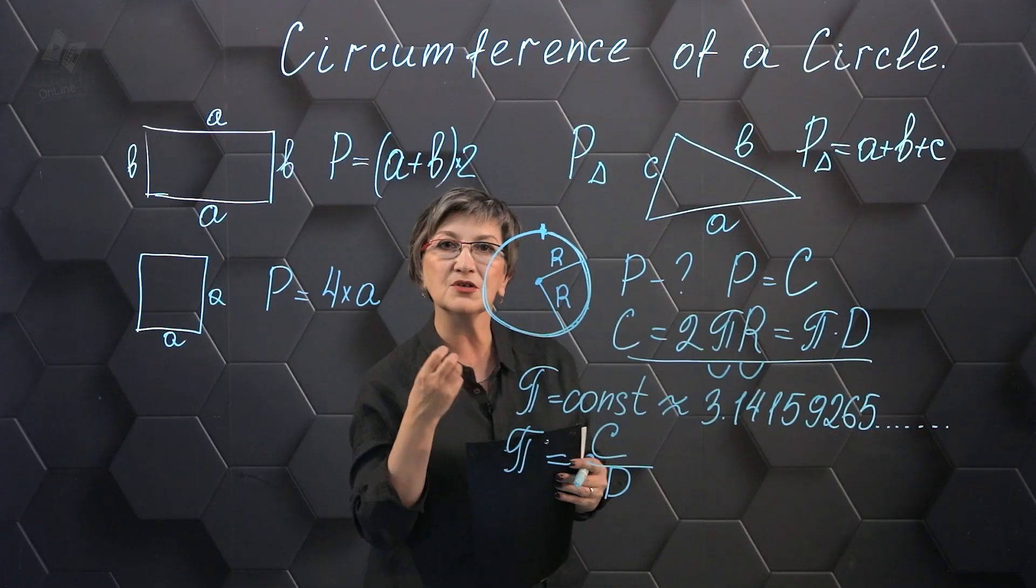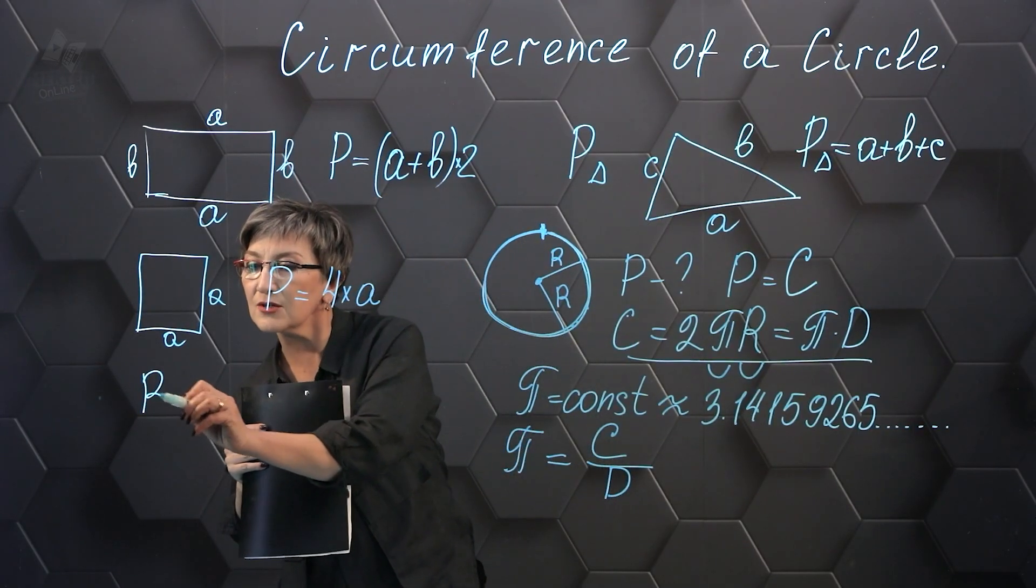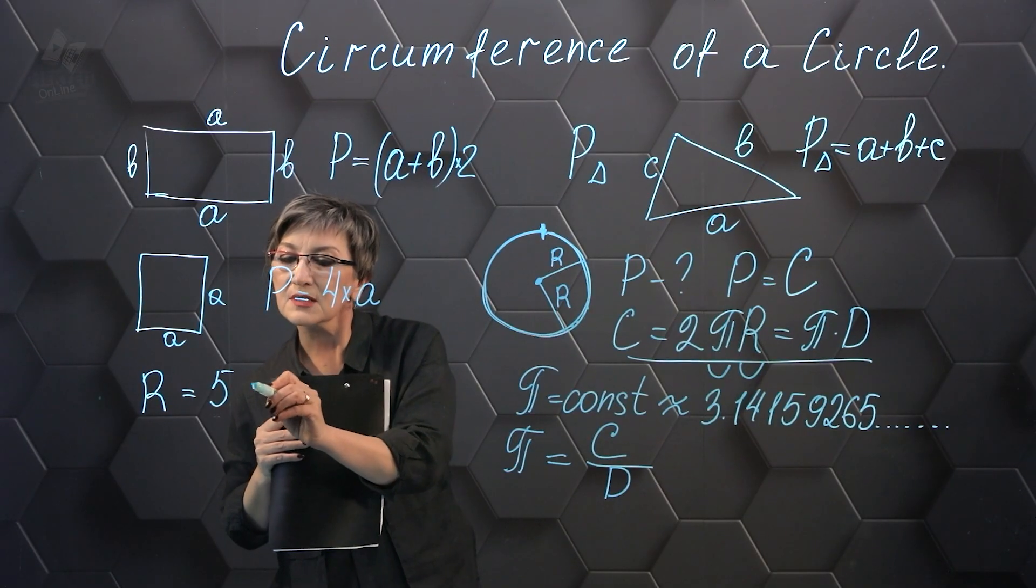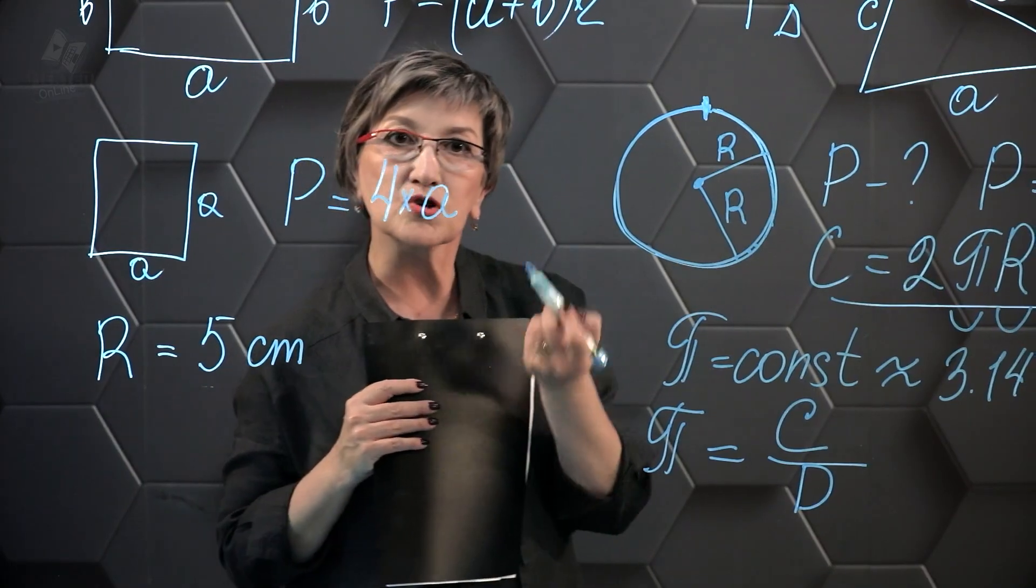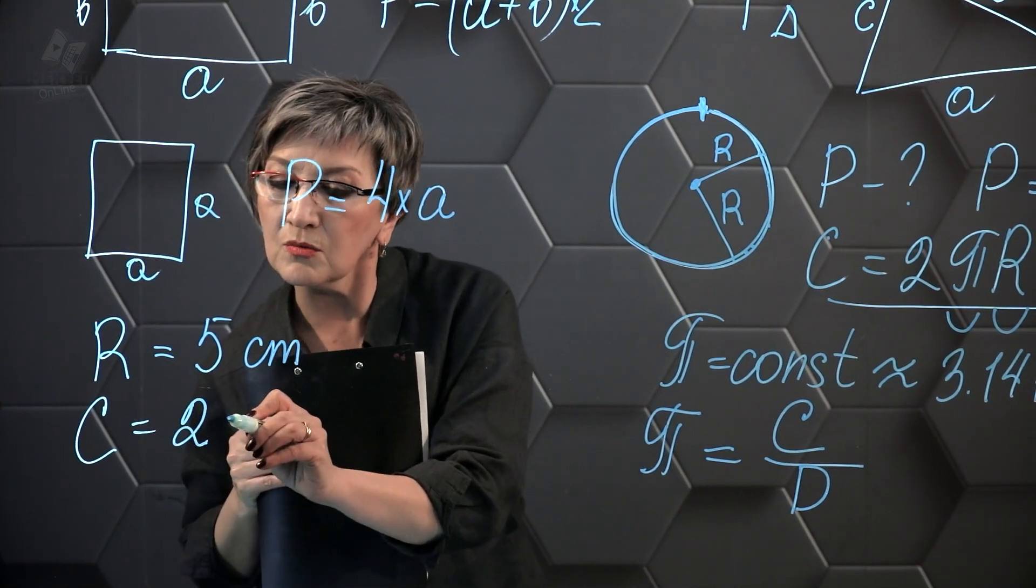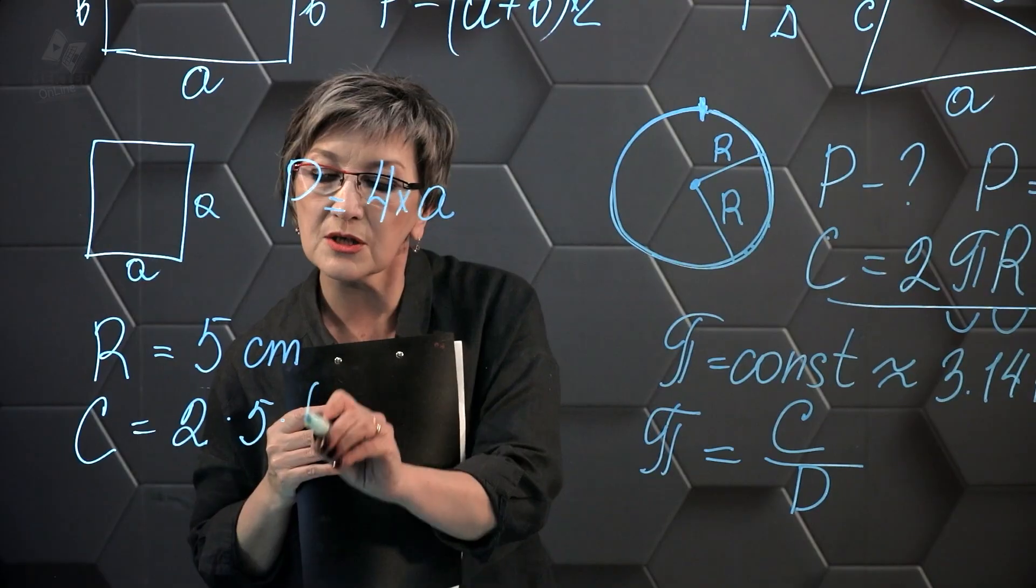As a result, when we calculate the length of the circle, for example, if the radius of the circle is 5 centimeters, then in order to find the length of the circle, I have to multiply 2 by 5 by the radius and multiply by π.